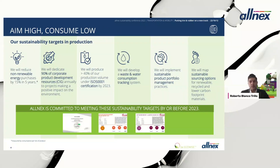Starting with the internal efforts of Alnex regarding sustainability — we have set our own goals for our production. We have defined targets that will impact our way of working, thinking, and producing in the next years. That includes reducing non-renewable energy purchases by 15% in the next five years, and dedicating most of our resources for product development in our strategic innovation group.